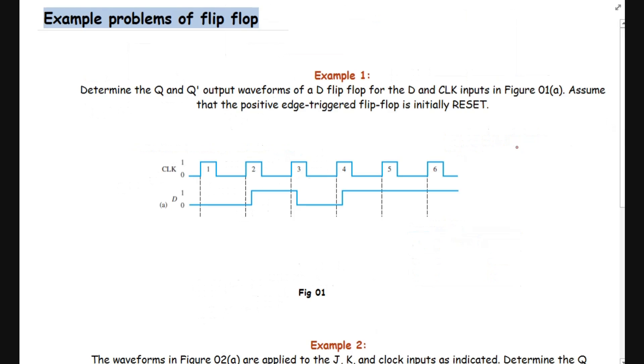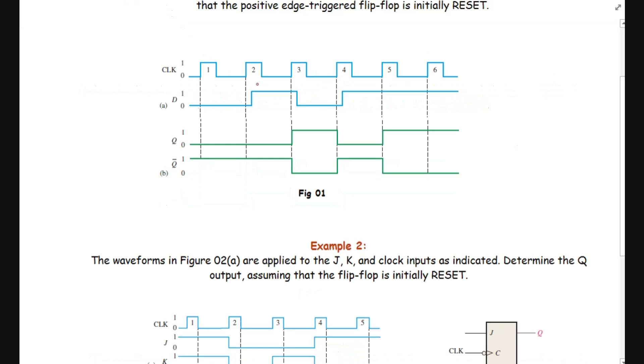The solution of this example could be given as follows. As you know, a positive edge triggered D flip-flop can only be triggered with the rising edge or positive edge. This one is the rising edge. Then we have this one, this one, the fourth, fifth, and sixth. So there are six instances where the flip-flop can be triggered.